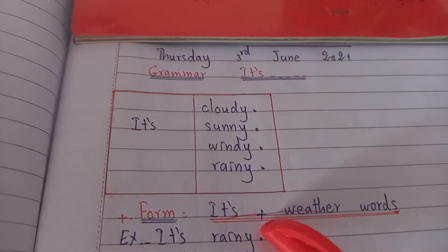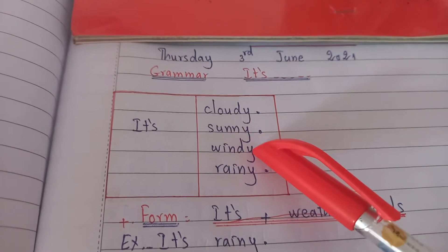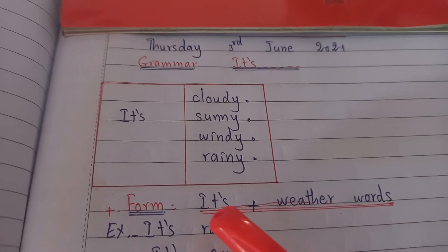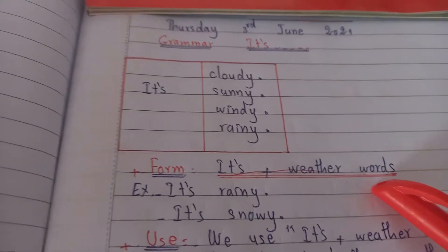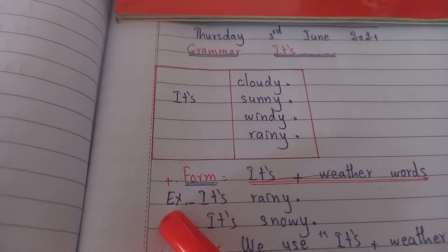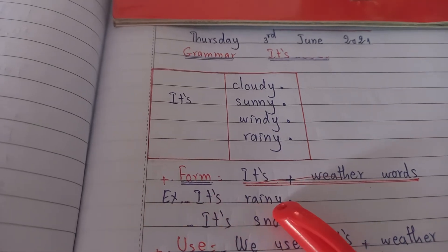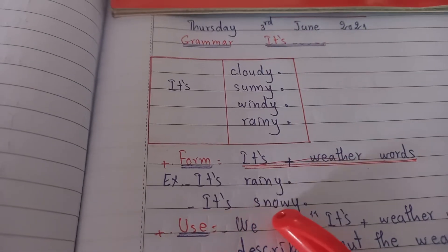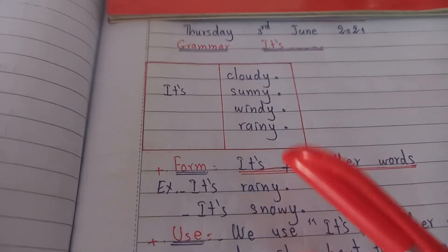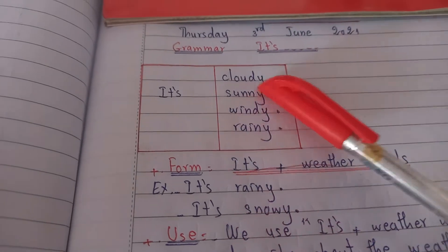The form is: it's plus weather words. Cloudy, sunny, windy, rainy — we call these weather words. So the structure is: it's plus weather words. For example: it's rainy, it's snowy.